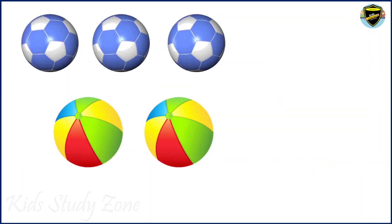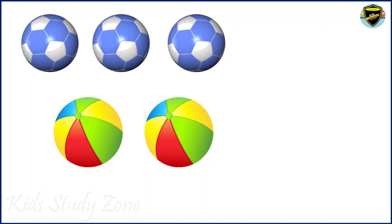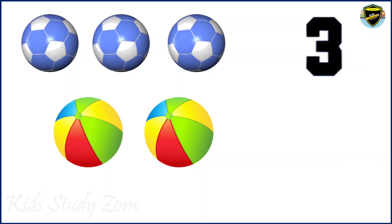Here we have some balls. You can see there are multicolor balls and there are blue color balls. Let's count the blue balls: 1, 2, 3. We have 3 blue balls. Now let's count the multicolor balls: 1, 2. We have 2 multicolor balls.